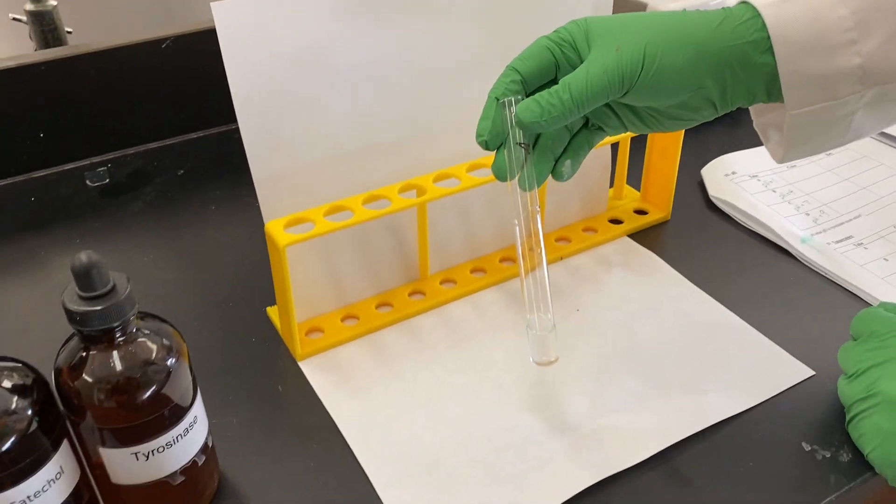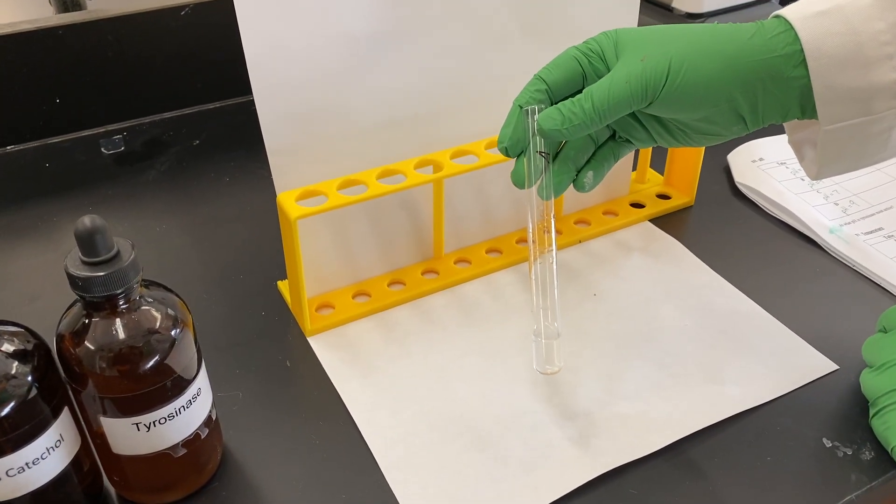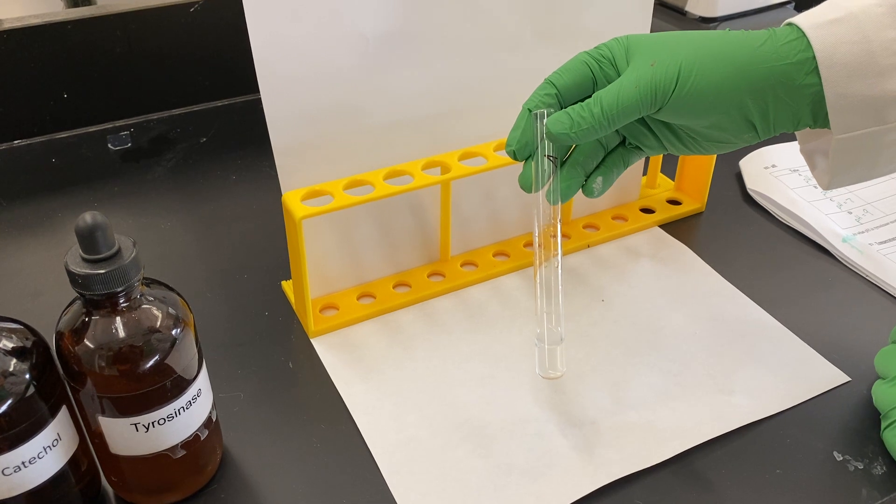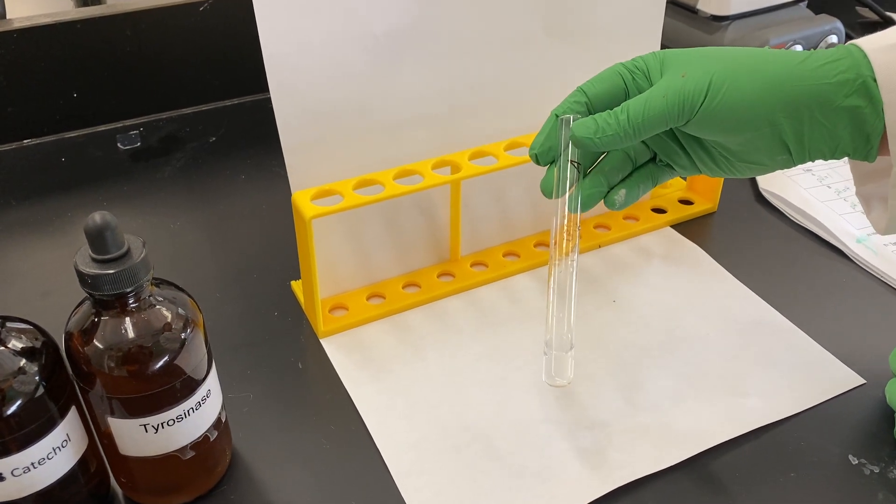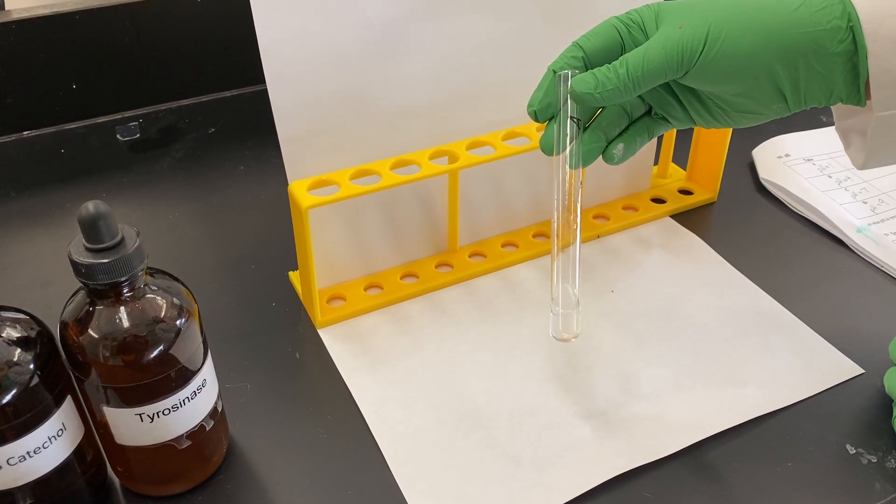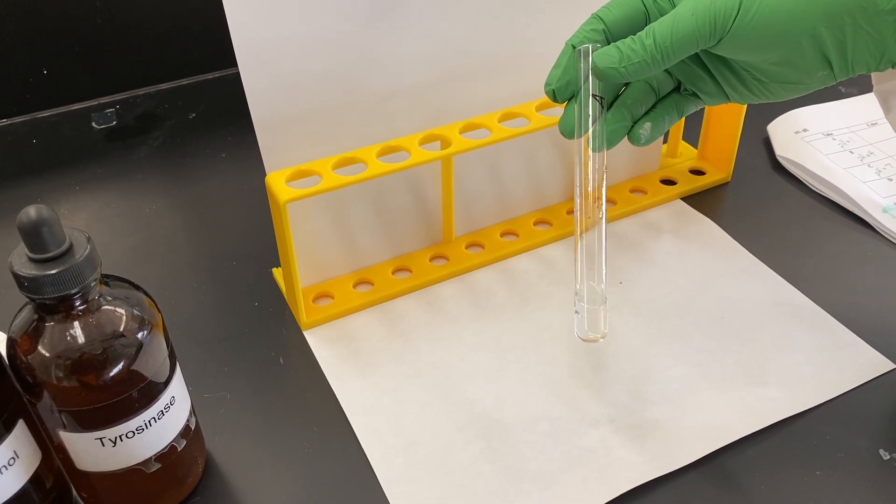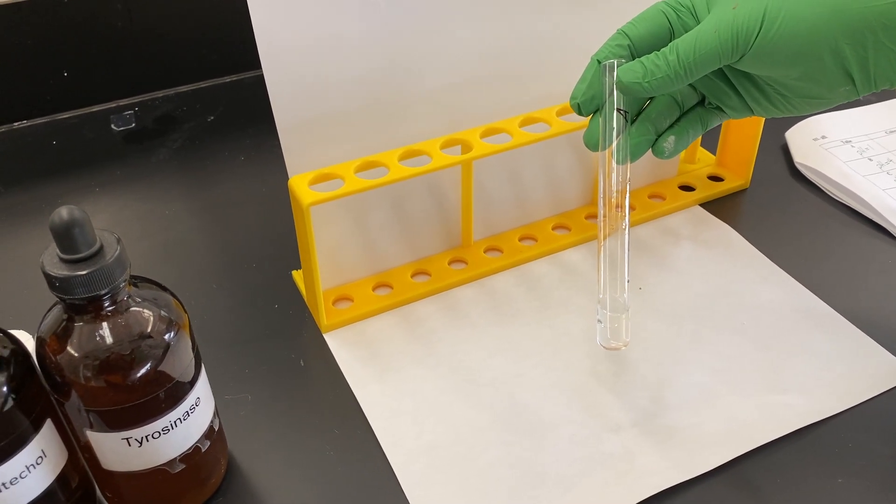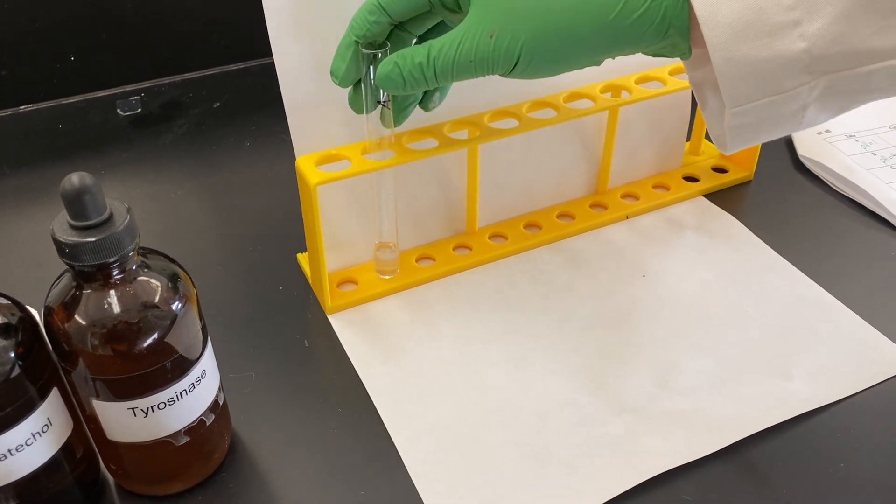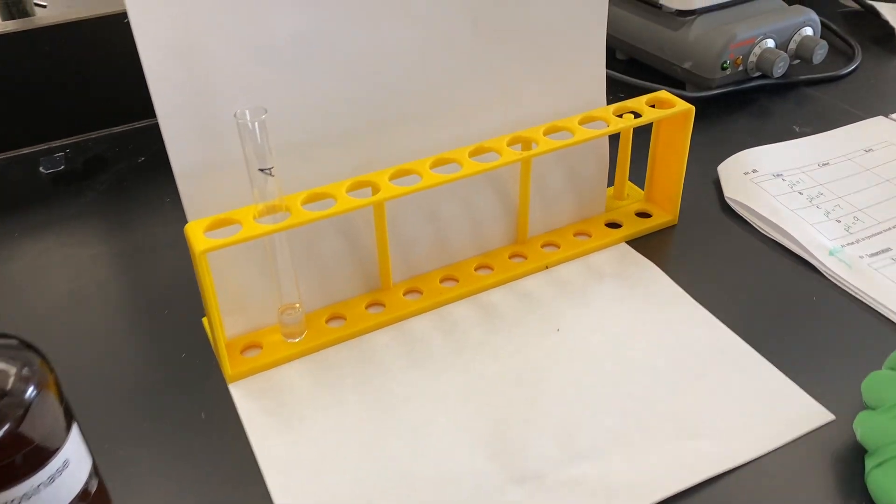This is test tube A. We of course have our catechol and our tyrosinase. We also have hydrochloric acid. This is at pH 1. I'm seeing no change. It looks clear to me. pH 1. Make sure to record this on your data sheet. Pause the video if you need. I'll see you in a second.